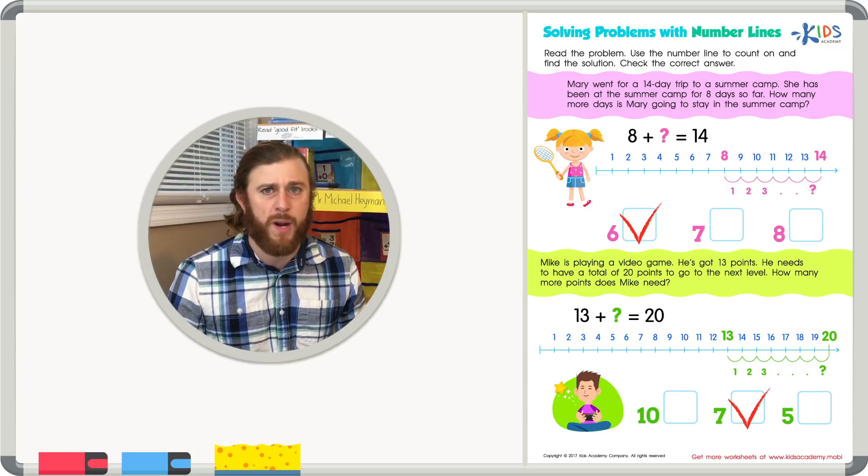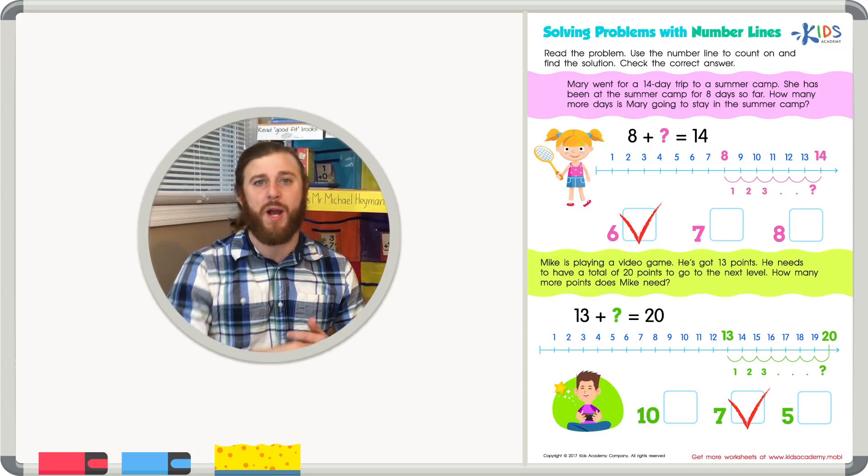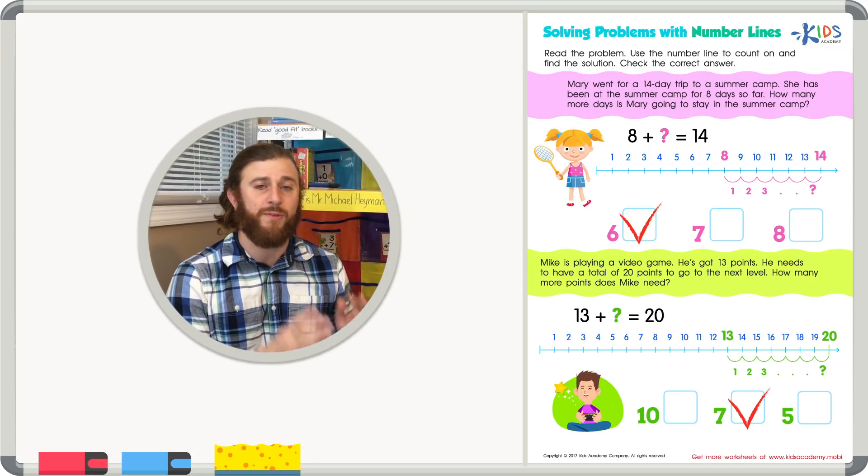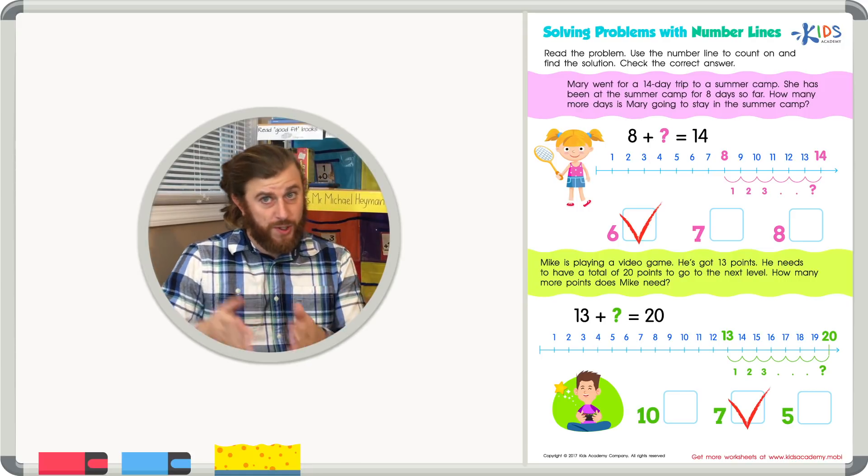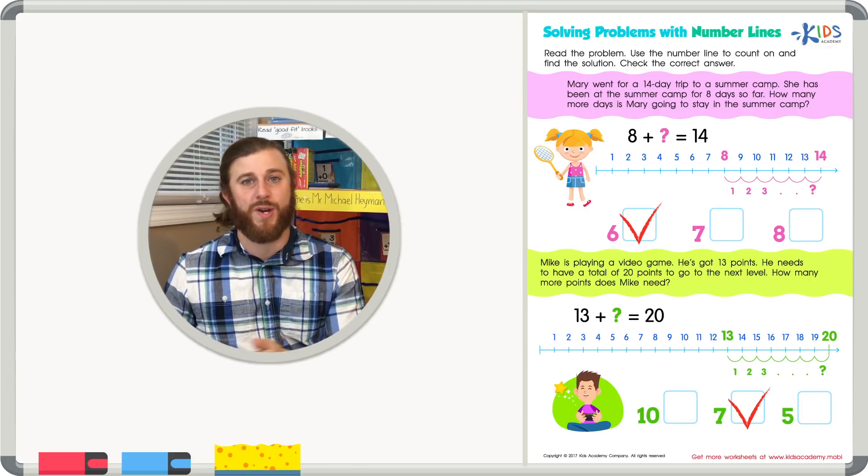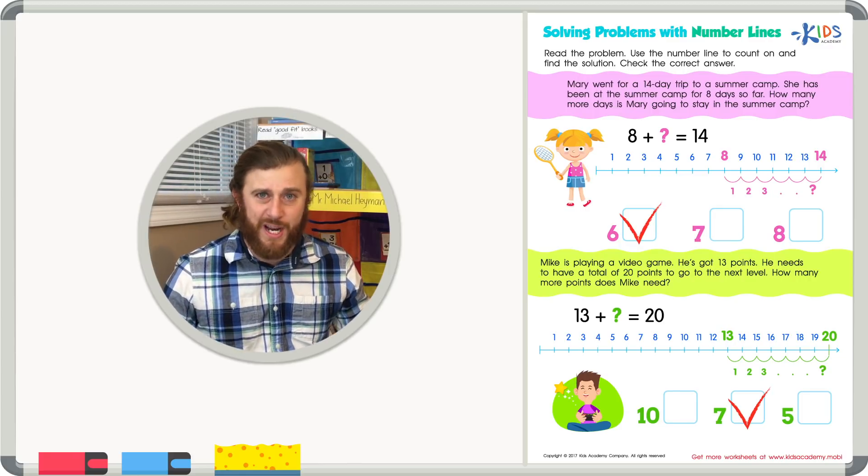Remember, boys and girls, even if you don't have a number line made, you can make one too. Start at the first number and count to the answer. The numbers that it takes you to get to the last number or your answer is the missing part in your equation.